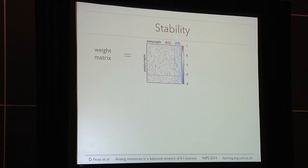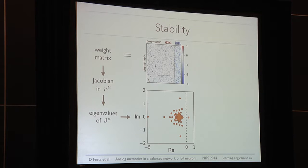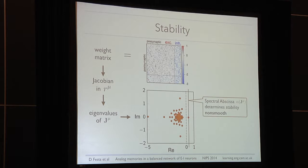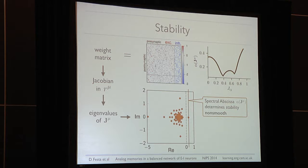We start with a random matrix with the separation between excitation and inhibition, from which we obtain a Jacobian matrix. We then study the eigenvalues for stability. In this example there is a positive eigenvalue — one unstable direction. The real part of the leading eigenvalue is known as the spectral abscissa. It determines stability but is a non-smooth and non-convex quantity, making it very hard to optimize. If we try to smoothly change one parameter of J, the spectral abscissa creates cusps and is very irregular, and moreover it gives no guarantees for transient behaviors.